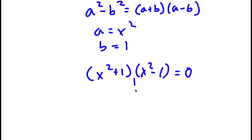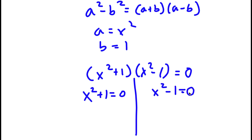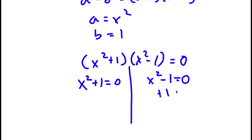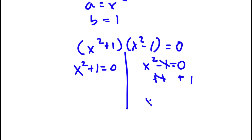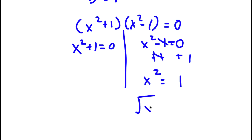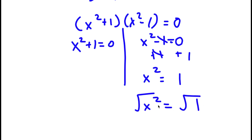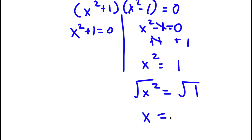This gives me two equations: x squared plus 1 equals 0, and x squared minus 1 equals 0. For x squared minus 1 equals 0, I simply add 1 on both sides and I'm left with x squared equal to 1. Taking the square root on both sides, the square root of x squared is x, so x is equal to positive or negative 1, because the square root of 1 is positive or negative 1. These are two solutions.